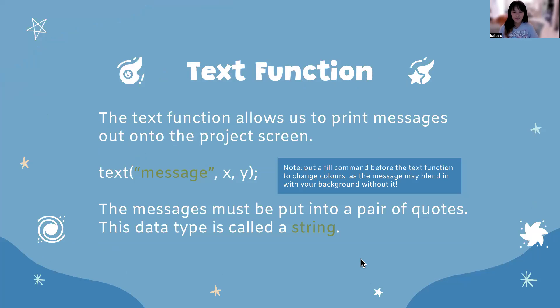Going into the text function, which I briefly mentioned earlier, the text function allows us to print messages onto the project screen. Text message x, y, you might recall this from beginning JavaScript. The message, as you can see, the green text right there, that is considered a string. The messages must be put into a pair of quotes because this calls the data type into a string. So whatever characters, they can be numbers, special characters, letters, words, sentences, anything that goes inside those two quotes, whether they are single or double, it will be considered a string, one value.